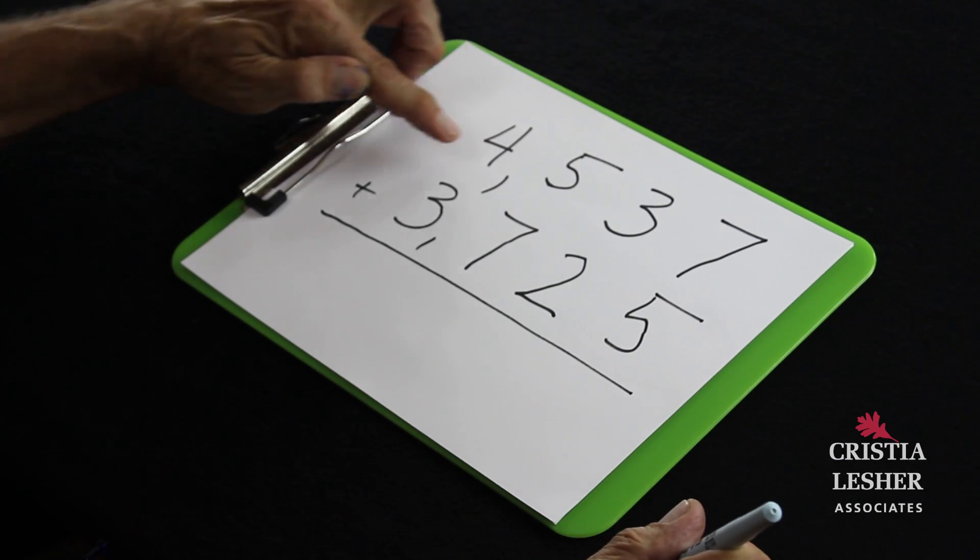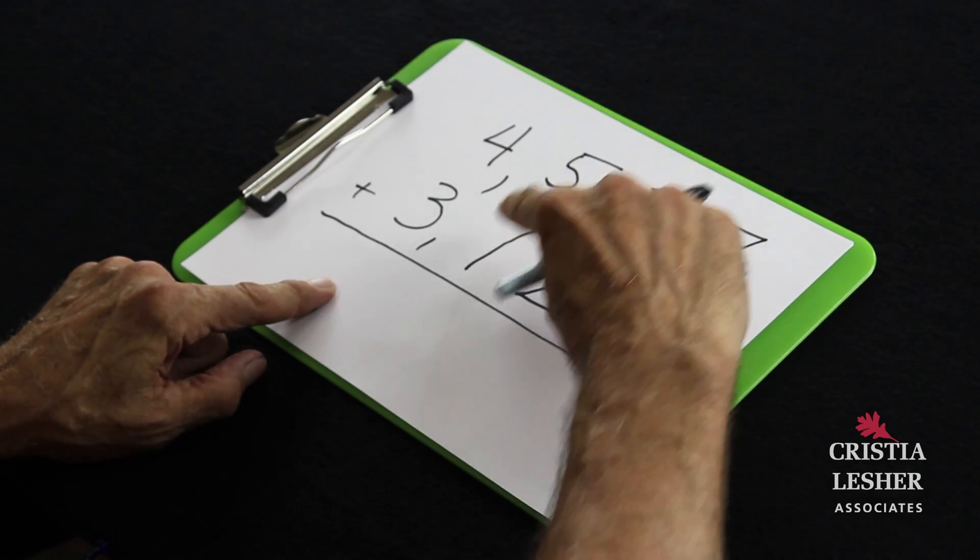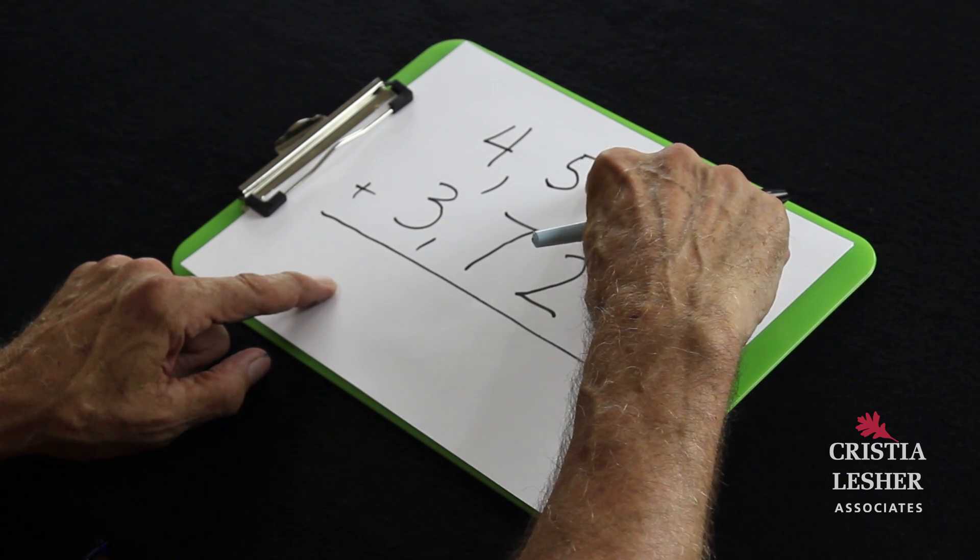So when I add this up I'm starting with the 4000 plus the 3000, which makes 7000. But before I write down the 7000, I'm checking to see that I have enough hundreds here to make another 1000.